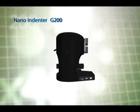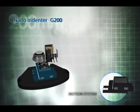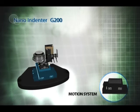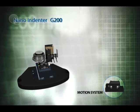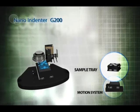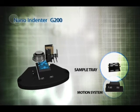The base system of the G200 comes well equipped for your mechanical testing needs. The base system includes an automated XY motion system. A novel tray design allows for planar alignment of samples.